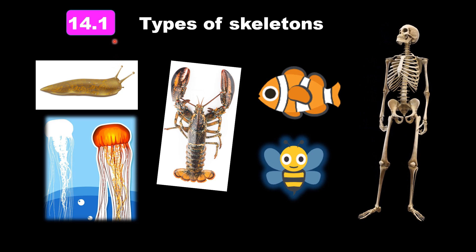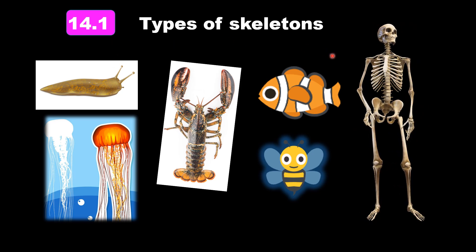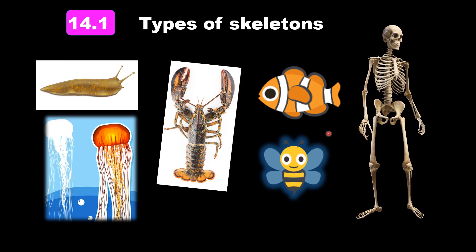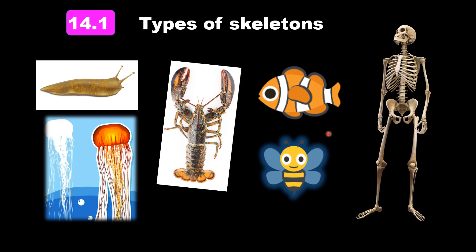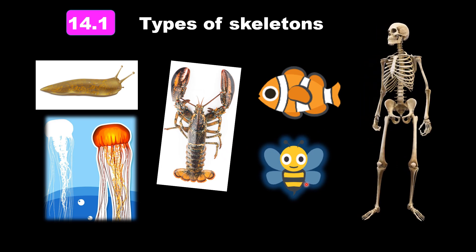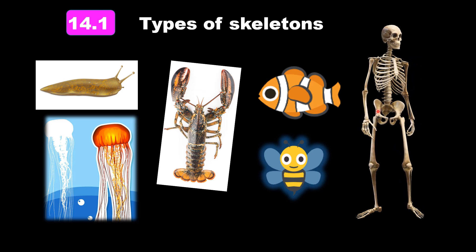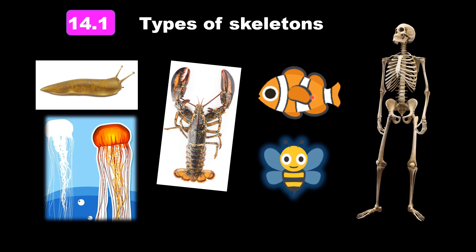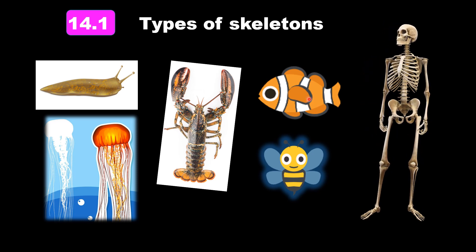So in this subtopic 14.1, we're going to discuss the types of skeletons. Looking at the organisms that can be found in the world today, do you know that there are three main types of skeletons? For lobsters, crabs, prawns, and also insects, these organisms have exoskeletons, whereas humans and other vertebrates like fishes, birds, and reptiles have endoskeletons.